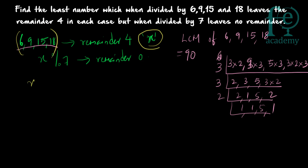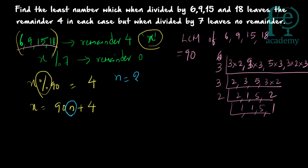So x modulus 90 equals 4, meaning the remainder when x is divided by 90 is 4. Therefore x = 90n + 4, where n can be any value 1, 2, 3, 4, and so on. A multiple of 90 plus 4 gives us the required number x. Our aim is to find the value of n.